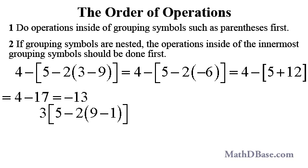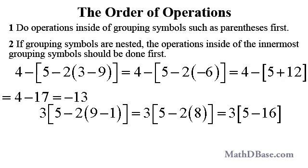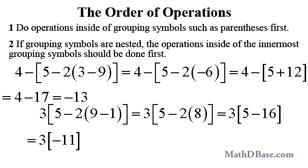If we have this expression, also with a single-layer of nesting, first subtract 1 from 9 to get 8, multiply negative 2 and 8 to get negative 16, then add 5 and negative 16 to get negative 11. Finally, multiply 3 and negative 11 to get negative 33.